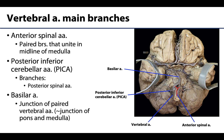Typically the largest branch of the vertebral arteries will be the posterior inferior cerebellar artery, which many anatomists lovingly refer to as PICA. PICA will supply parts of the cerebellum and the medulla, and will typically give off its own branch, the posterior spinal arteries. The posterior spinal arteries are the posterior counterparts of the anterior spinal artery, running on the posterior side.